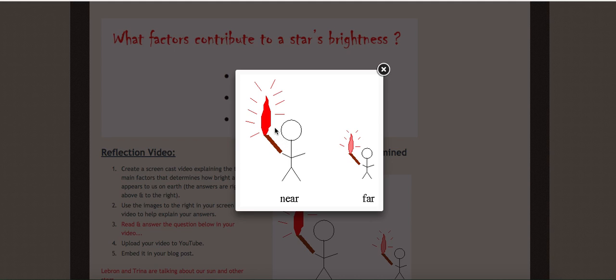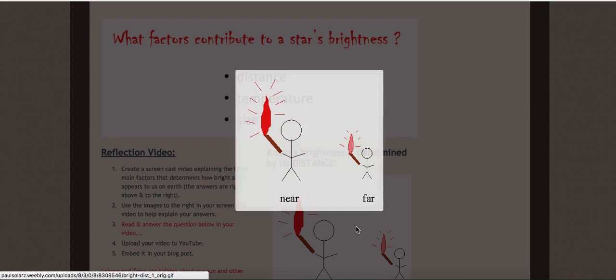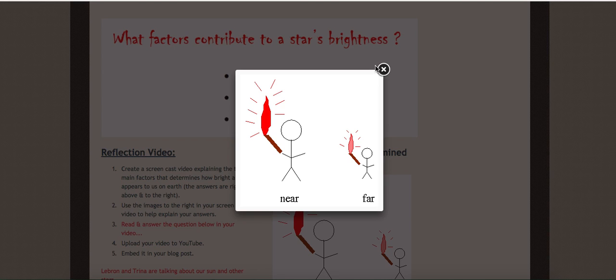Also, a star's brightness occurs from the temperature. The higher the temperature is, the brighter it is.